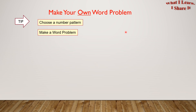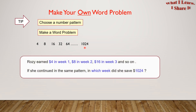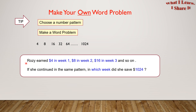Make your own word problem! Here's a tip: you can choose a number pattern and try to make a word problem out of it. So here are some numbers I took, like 4, 8, 16, 32, 64, and so on until 1024. Now we can make a word problem out of it. Here's an example: Rosie earned $4 in week 1, $8 in week 2, $16 in week 3, and so on. If she continued in the same pattern, in which week did she save $1,024? It's so easy to make your own word problems, right?